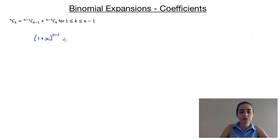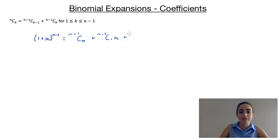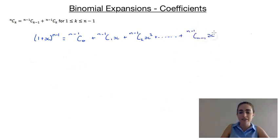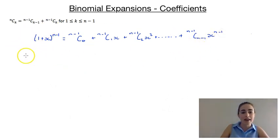So if we go through and expand that, we know we're going to have (n minus 1)c0 plus (n minus 1)c1 times x plus (n minus 1)c2 times x squared, all the way up until we get to (n minus 1)c(n minus 1) times x to the power of n minus 1. Now I'm going to multiply everything in here by x.